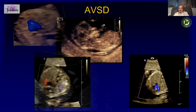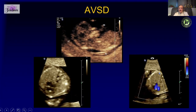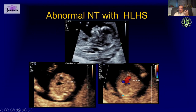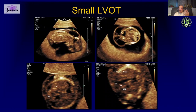We are picking up more and more cardiac anomalies. Typically we pick up atrioventricular septal defects, hypoplastic left heart, and outflow tract anomalies. Here for example we had an extremely small aorta and a small left ventricle with a large cystic hygroma.